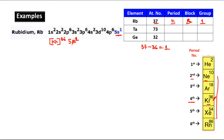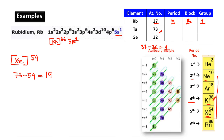Next element has atomic number 73. The previous noble gas is Xenon with atomic number 54. Write the configuration as [Xe] plus extra electrons. Subtracting 54 from 73 gives 19 extra electrons to place. To do this, you need to use the Aufbau principle.